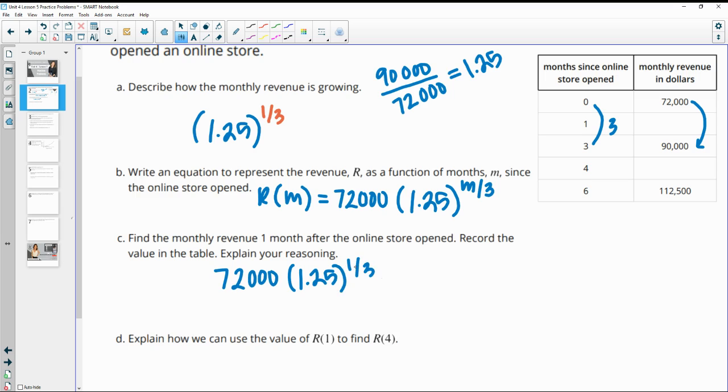since we want one third of the growth factor or one month's worth. So then if you type this into your calculator, it is approximately $77,559.65.